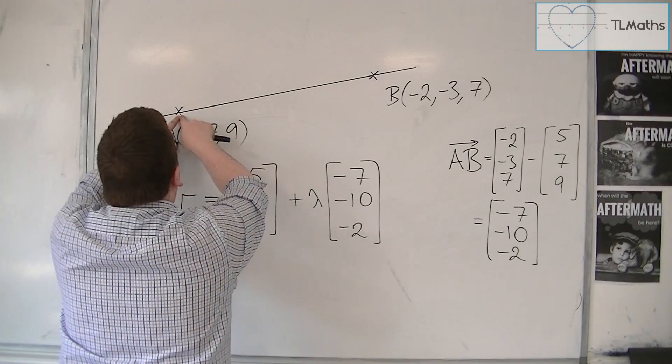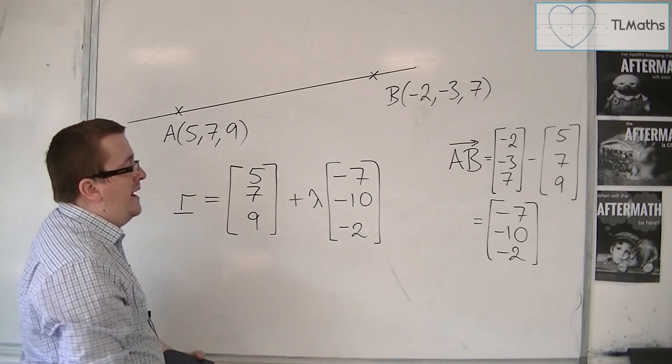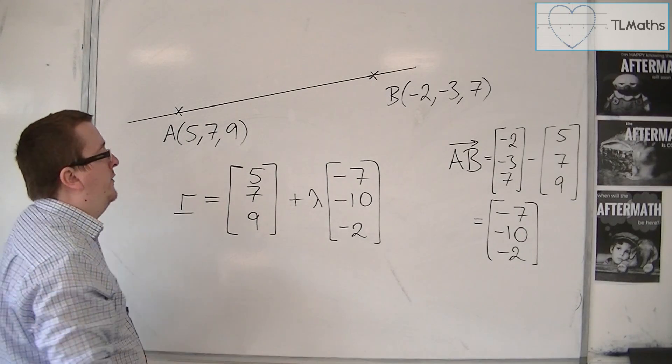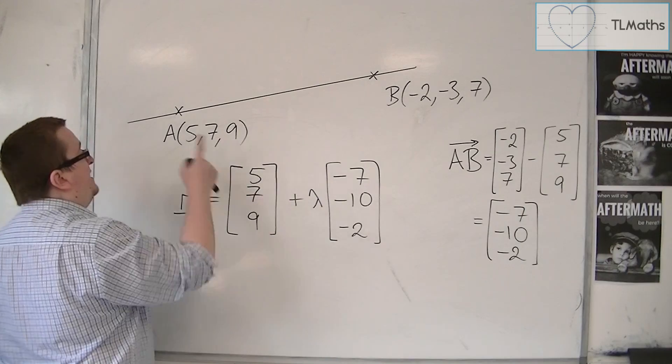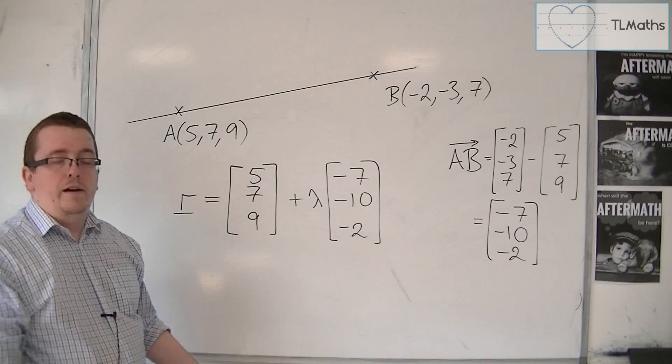If lambda was -1, it would get me a point down here. So that is how this equation works. Depending on the value of lambda, it tells you where you need to be along that line.